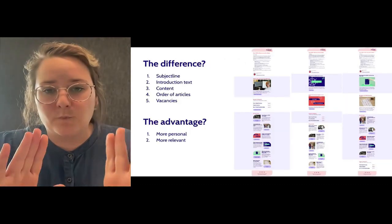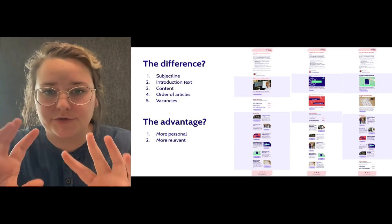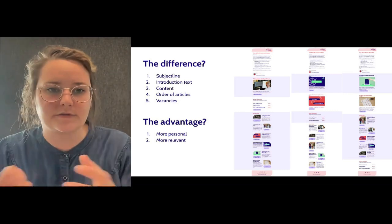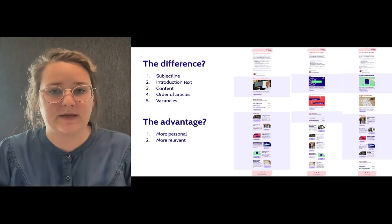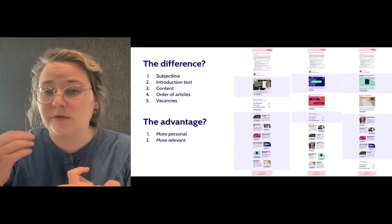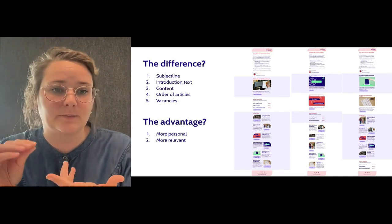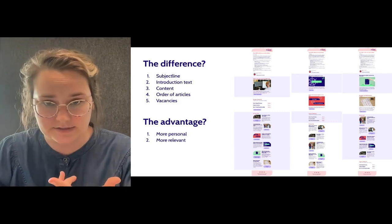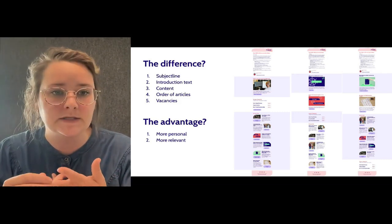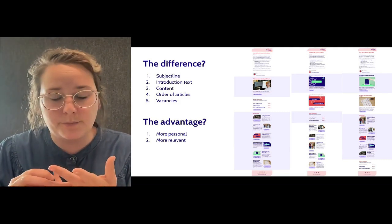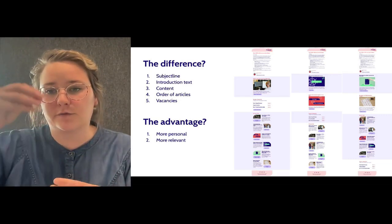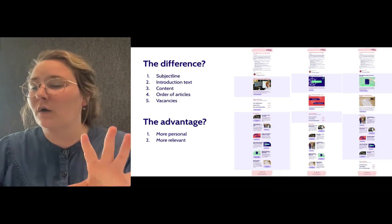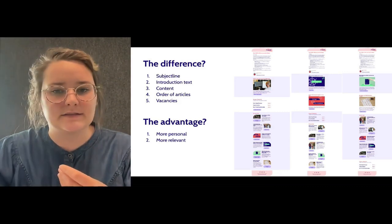What is the difference? You can see three different versions of the newsletter on the right — you can already see it's a bit shifted. The content is different. We differentiate based on subject line, introduction text that is more personalized to your segment, and you receive different content. You can see in the first purple block that the three blocks are different content — that's the main article. The order of the articles is also very important: if you're in the tech segment, the first articles you read will be more technical.